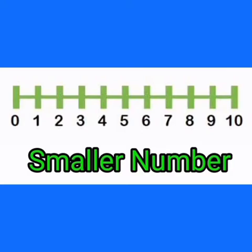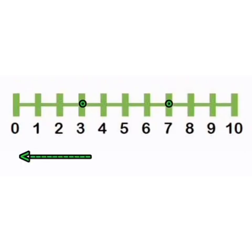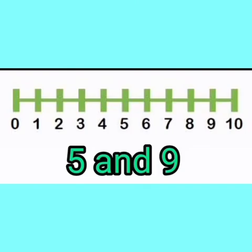Now let's see smaller number. The number that is closer to zero on the number line is called the smaller number. For example, let's compare the two numbers seven and three. We can see three is closer to zero on the number line, so three is smaller than seven.